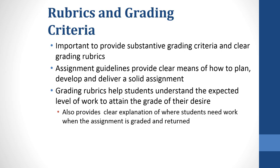Rubrics and grading criteria: in addition to providing a good range of assessments, it's also important to provide substantive grading criteria in clear grading rubrics. Remember that particularly in an online class, students can only work with what's been put into the guidelines. Within the hybrid class, you want to reduce class time spent explaining assignments where possible since you have less time than normal to work with. The assignment guideline provides a clear means of how to plan, develop, and deliver a solid assignment, while the grading rubric helps the student understand the expected level of work to attain their desired grade. It also provides a clear explanation of where the student needs to improve when the assignment is graded and returned.